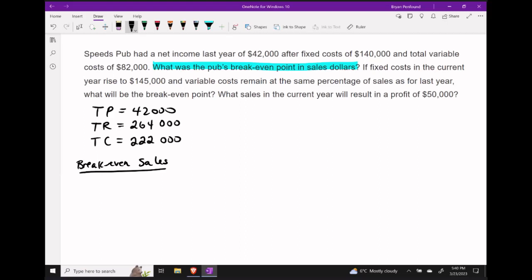So the break-even point in terms of sales dollars is going to assume that we are going to make a total revenue of $222,000. If we can earn that in revenue, then we know that we can cover our total costs. Anything that we make above this comes in as profit.